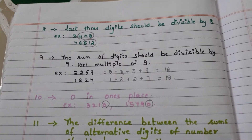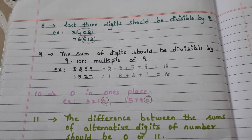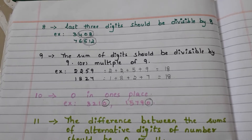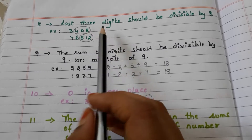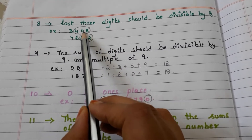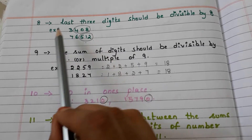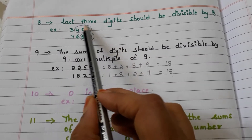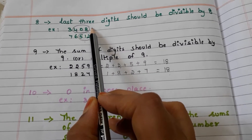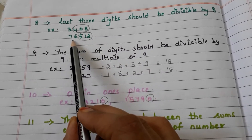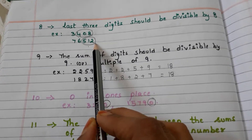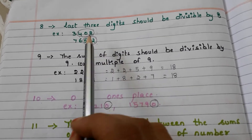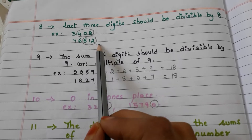Let us go with the number 8. If a number is divisible by 8, the last 3 digits should be divisible by 8. For example, 3,408 — the last 3 digits are 4, 0, 8. And 408 is divisible by 8, so the entire number is divisible by 8. Take another number: 76,512. The last 3 digits are 5, 1, 2. And 512 is divisible by 8, so the entire number is divisible by 8.